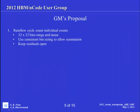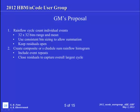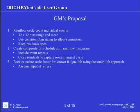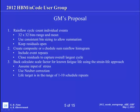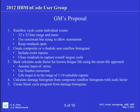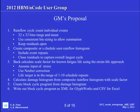So our proposal: AK and I got with Kurt and came up with this approach where we said we're obviously going to have to rainflow count. We're going to force to a 32 by 32 bin, which is a little different than what we've been doing as our standard — range-mean bins are square. We use consistent bin sizes because we've got to do some summing, and keep the residuals open. Then you create your composite rainflow, apply your duty cycle, include the event repeats, close the residuals to capture the overall larger cycle, then back-calculate your scale factor. We assume a strain life approach throughout this, but we do use stress units for our input with Neuber correction. The life target was something Kurt needed when putting code together, but typically in the automotive industry you'll use multiple lives so you can do your reliability analysis once you've got multiple samples. Then we calculate the damage histogram from the composite rainflow with the scale factor and create the block cycle program.